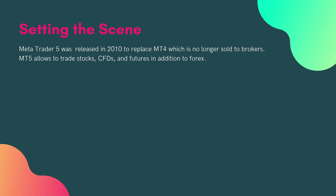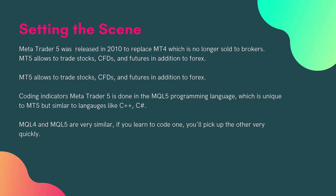MT5 allows you to trade stocks, CFDs, and futures in addition to Forex, which is what it's most commonly used for. Coding indicators in MetaTrader 5 is done in the MQL5 programming language, which is unique to MT5 but very similar to C++ or C#. It's probably more like C# if you code in another language — very similar in syntax, structure, functions, and classes.